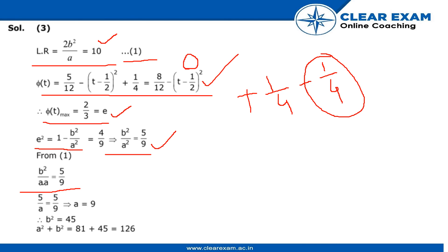From there, we got the value of a which is equal to 9 and b² which is equal to 45. We can get it from here like b²/a² and a is equal to 9.